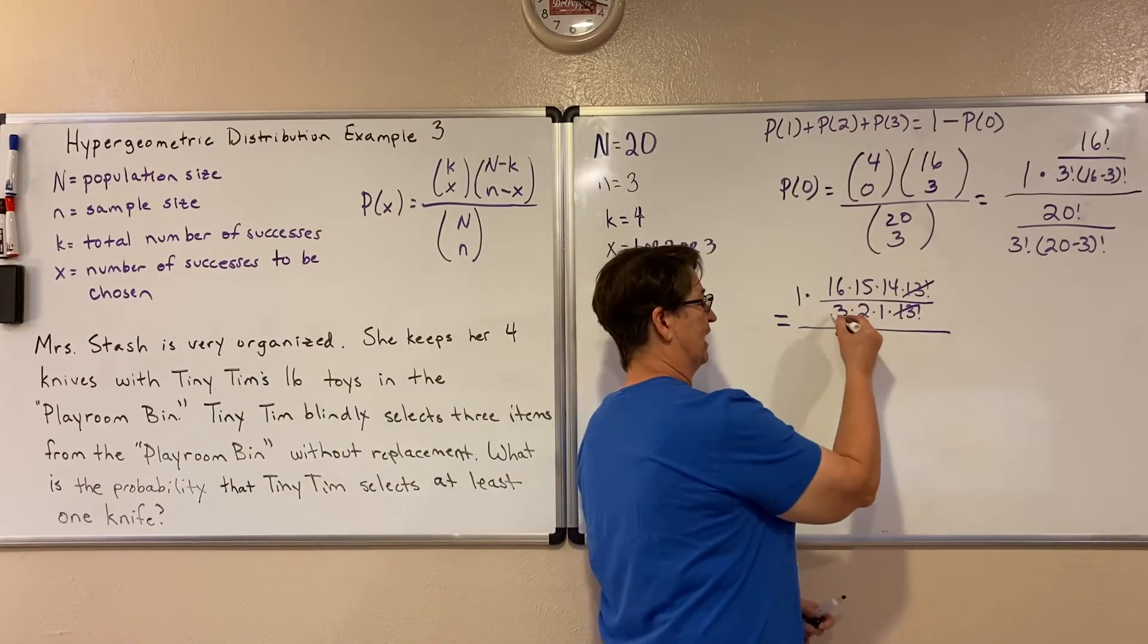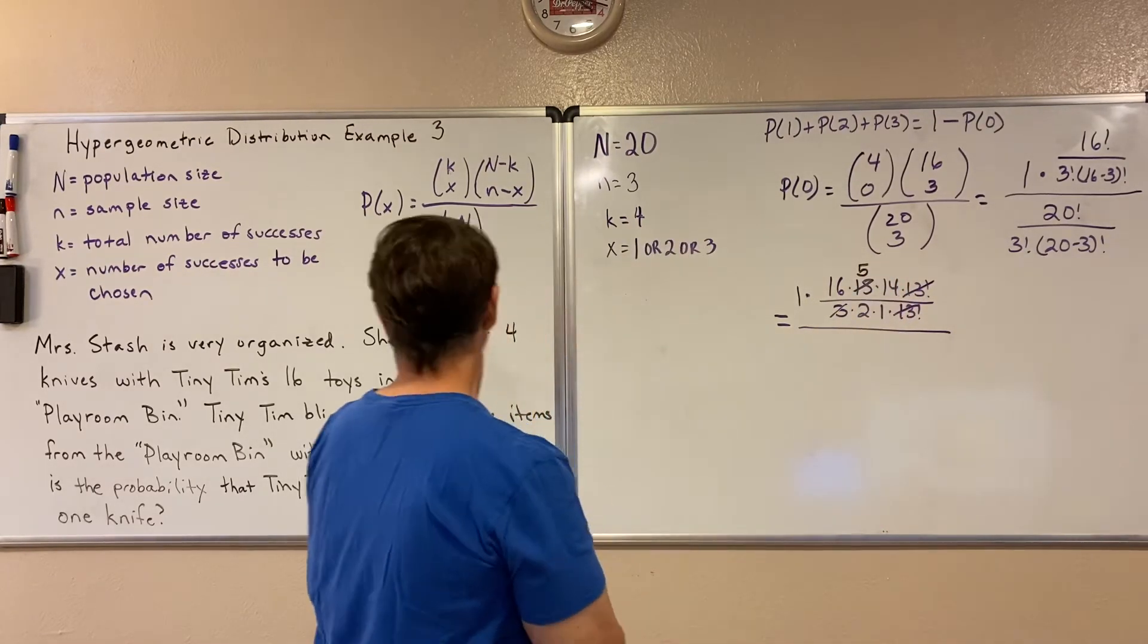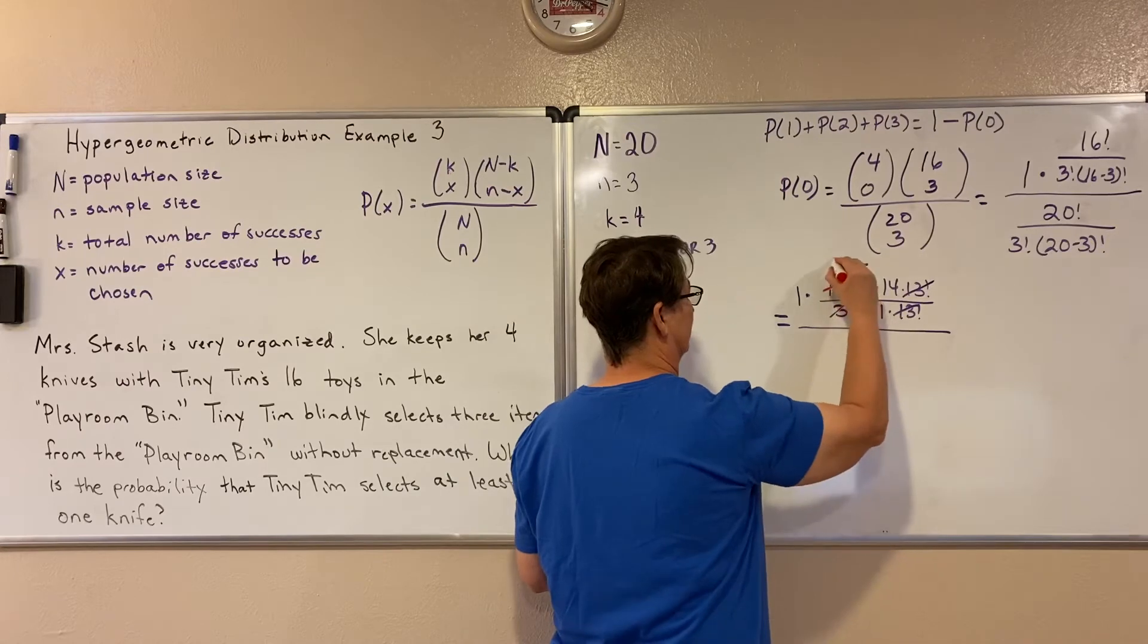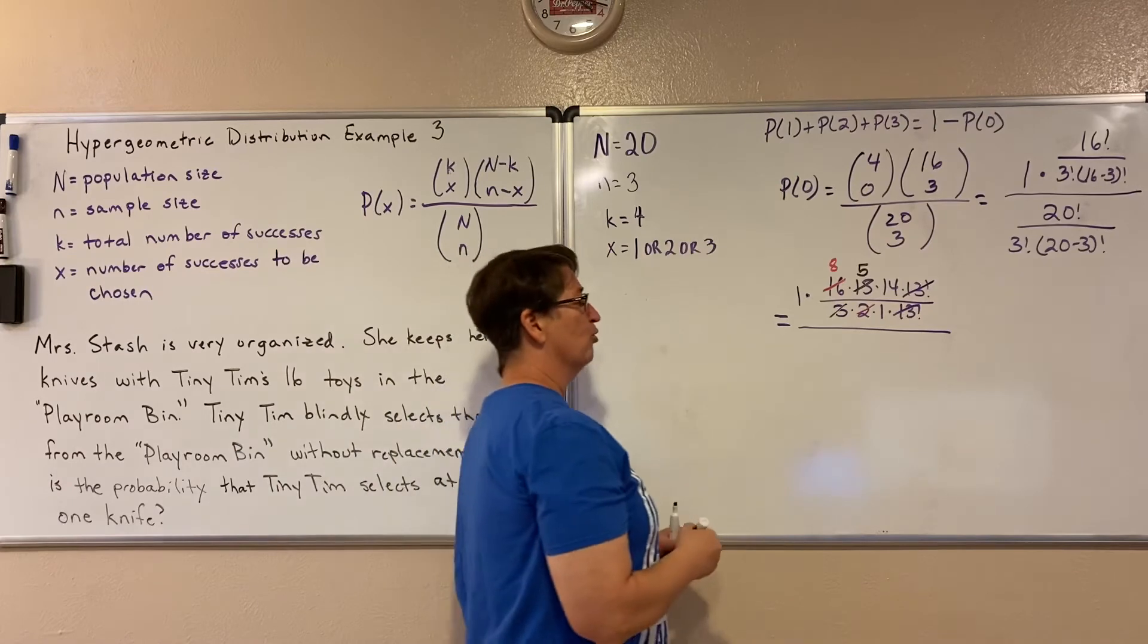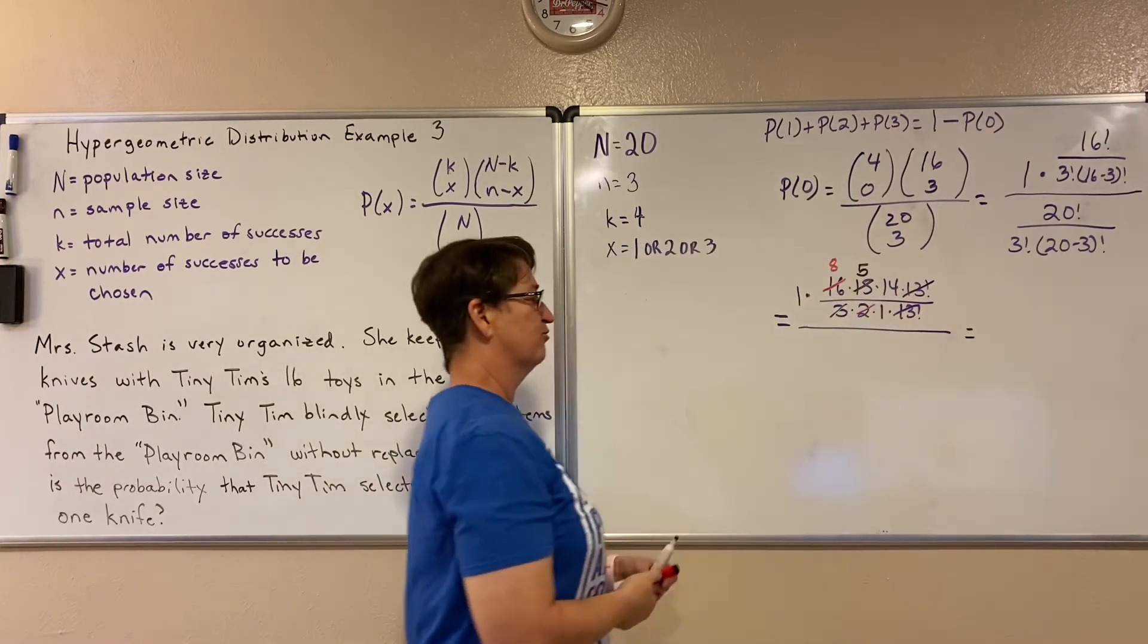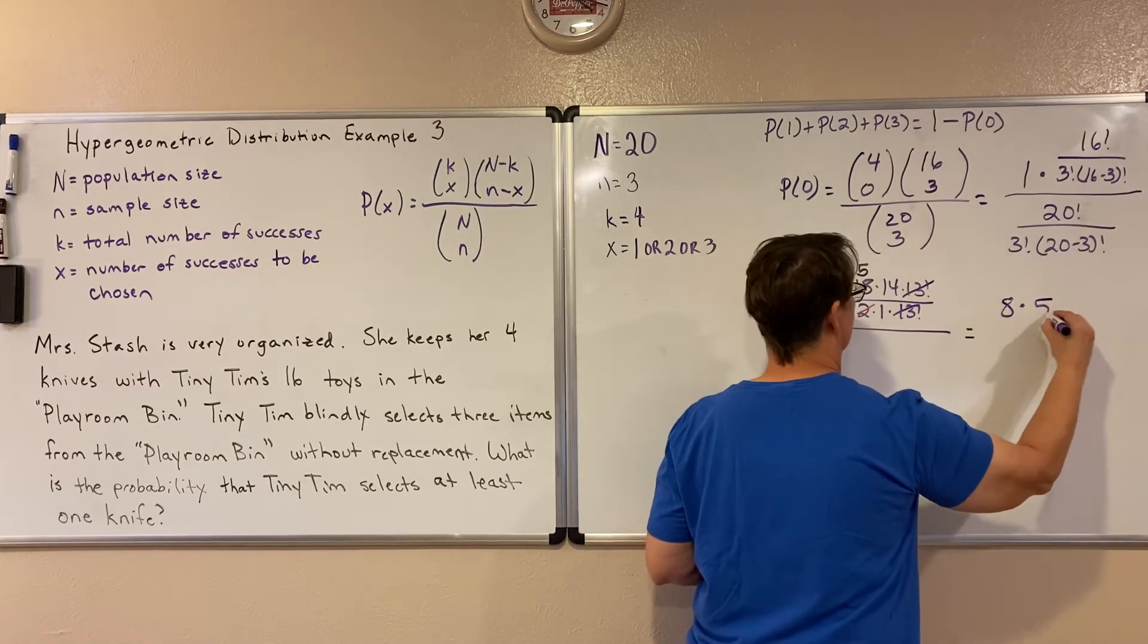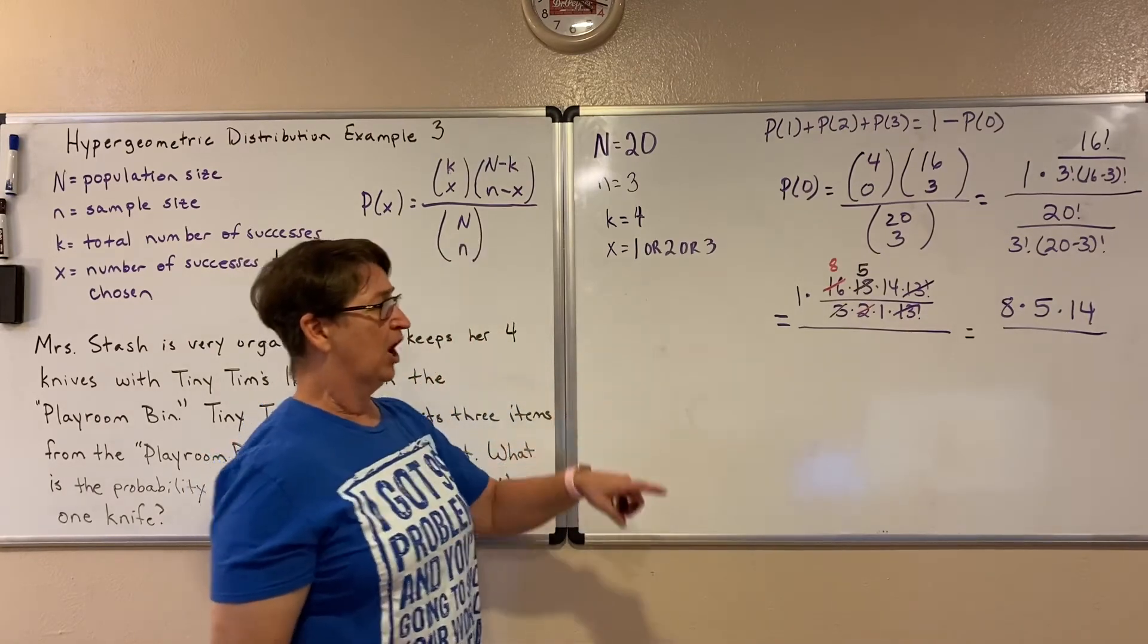I could continue to simplify. We know that when we do these combinations that we should end up with one on our denominator here. So three goes into 15 five times. And two can go into either the 16 or the 14. Take your pick. I'll make it go into the 16 to get eight. It doesn't matter. We'll both get the same answer. So in my numerator, I'm going to be left with one times eight times five times 14. Since one times eight is just eight, I'm going to read the one off. So we got eight times five times 14 in our numerator.